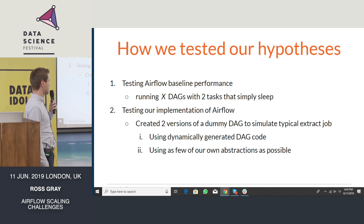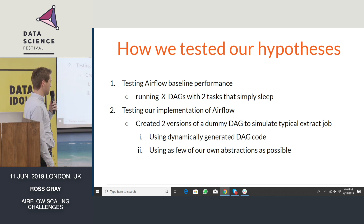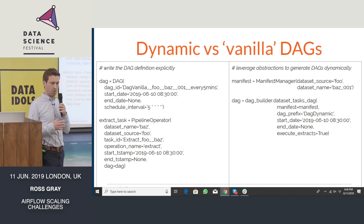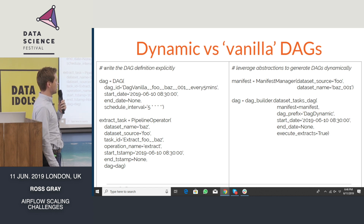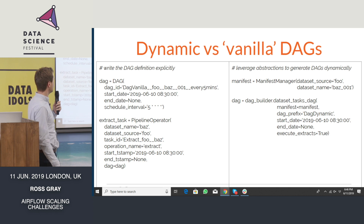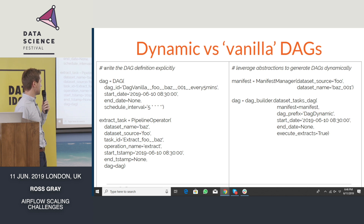Secondly, we wanted to test our implementation of Airflow. To do this, we created two versions of the same DAG, and we chose a DAG that simulated a real-world example of an extract job in our pipeline. On the right, we have the example of our dynamically generated DAG, which has a manifest — effectively our config file — and the DAG builder which reads in that config file and generates the DAG. And on the left, we have what we call a vanilla implementation, where we define the Airflow DAG explicitly and assign it a task to run.